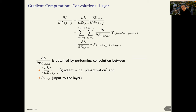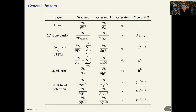This is not a coincidence — we can generalize this observation to other types of layers. In this table, we present the per-example gradient for different layer types. If you look at the third column, they all correspond to the gradient with respect to pre-activation, and the second operand is always the input to the layer. Depending on the layer type, we simply perform a different type of operation between these two operands.